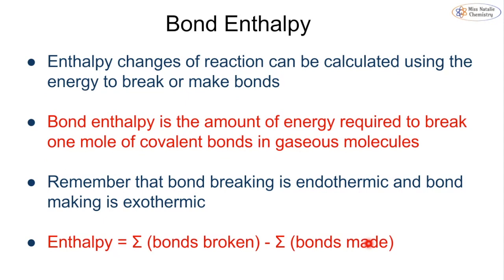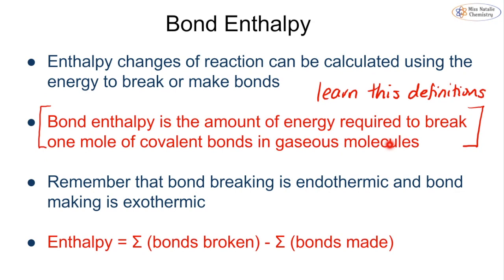We can calculate the enthalpy change of a reaction by looking at the energy used to make or break bonds, using a value known as bond enthalpy. My biggest piece of advice is to learn this definition, as it can come up as a one or two marker in exams. Bond enthalpy is the amount of energy required to break one mole of bonds in the gaseous state. Those two underlined parts — one mole and gaseous state — are extremely important.